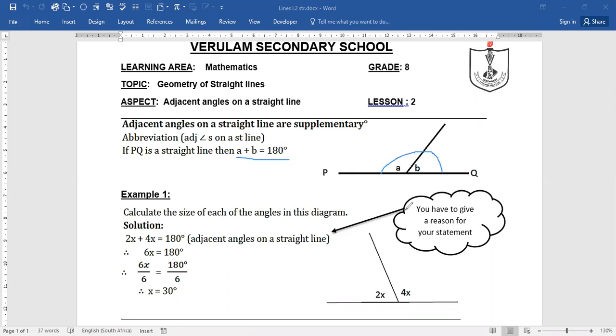And your reason is adjacent angles on a straight line. Now remember, you have to give a reason for your statement. Whenever you're working on a geometry problem, you have to give a reason for making a statement.